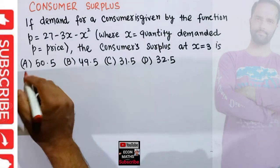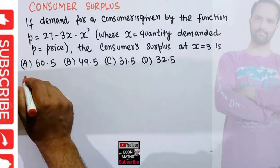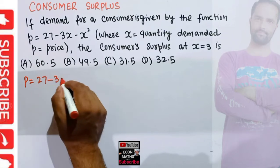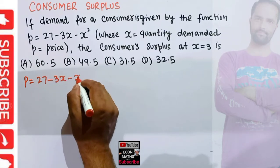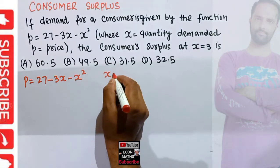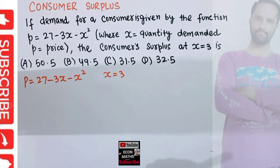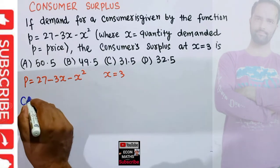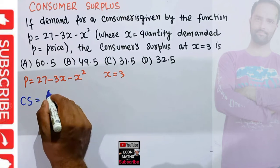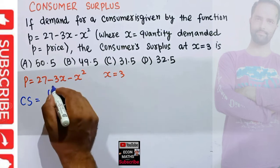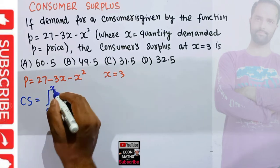So what we are given is the demand function: P equals 27 minus 3X minus X squared. We are told to find the consumer surplus when X equals 3. The formula for consumer surplus is the definite integral from 0 to the equilibrium quantity X.